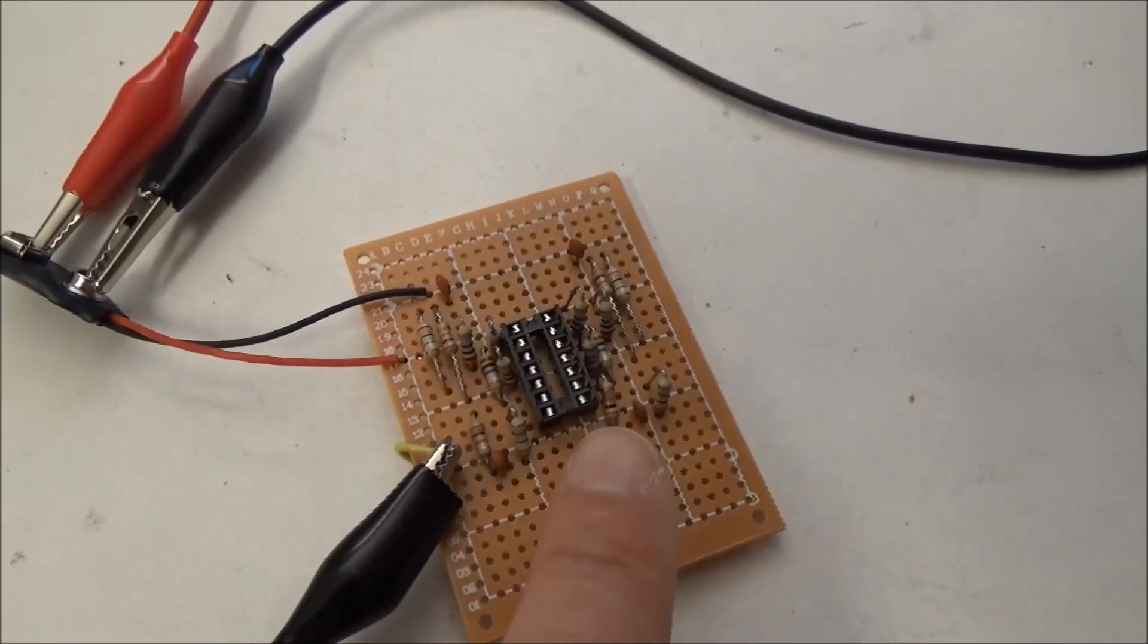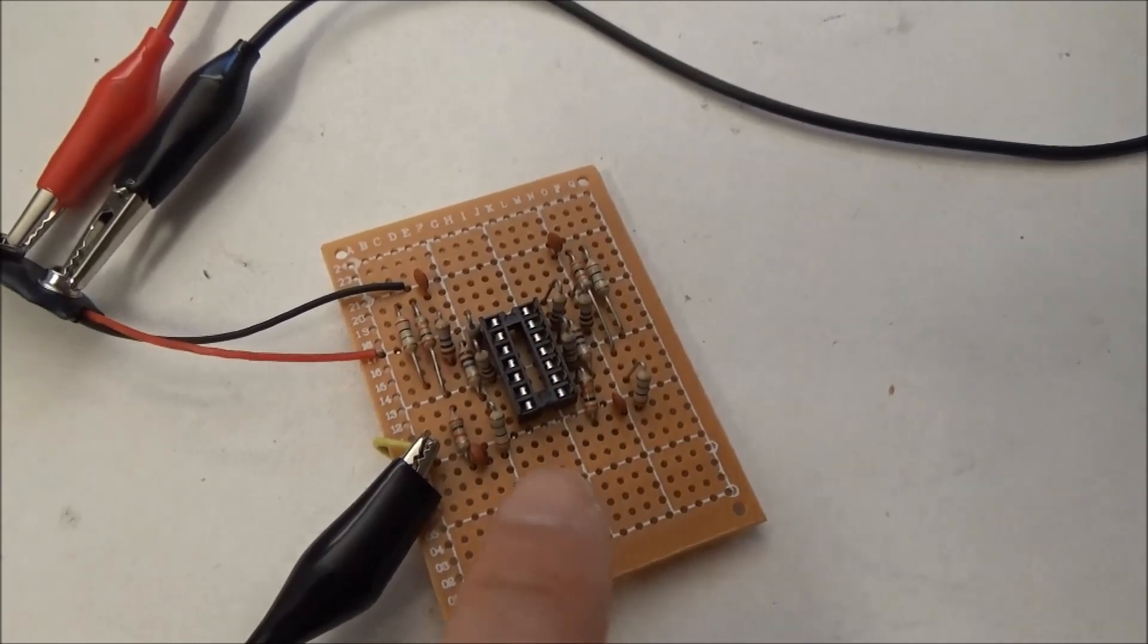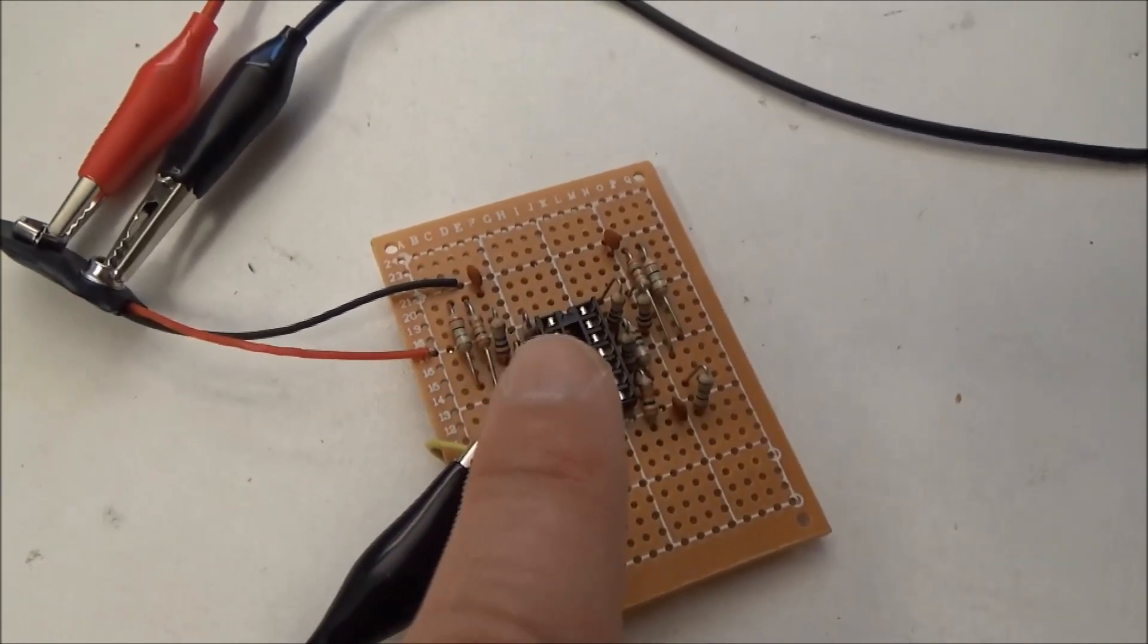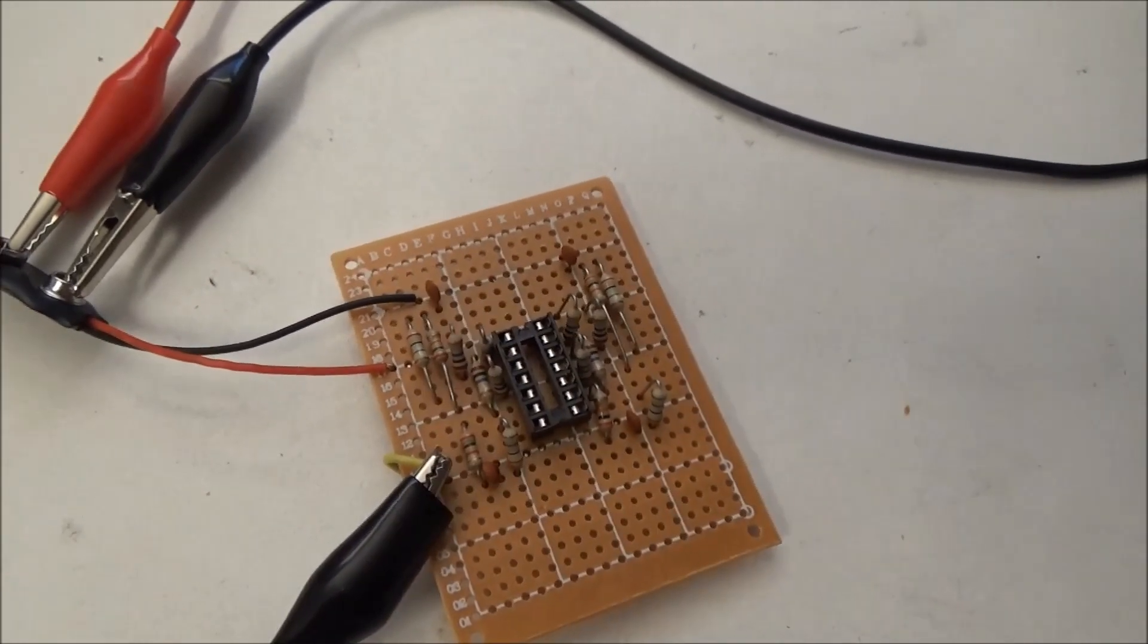There's a socket for my LM3900 and then four copies of the same circuit, one for each of the Norton op-amps on the chip.